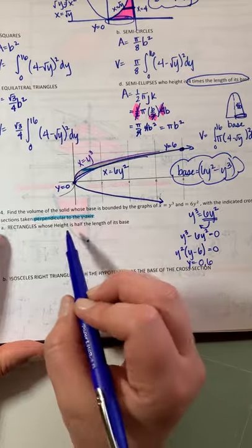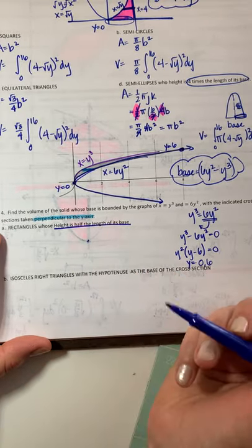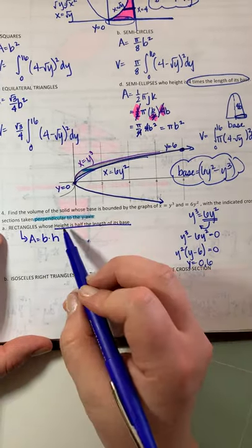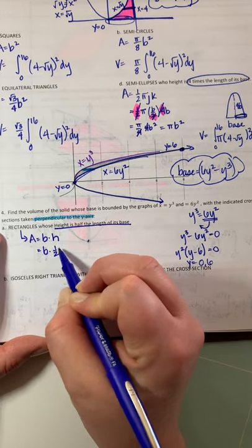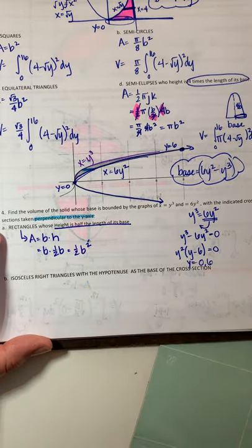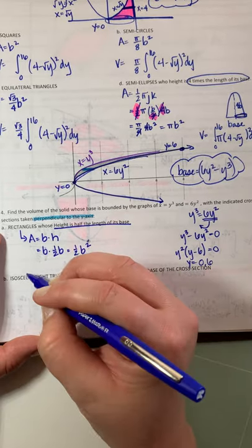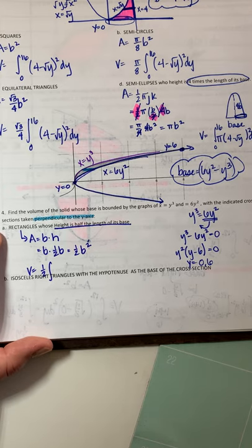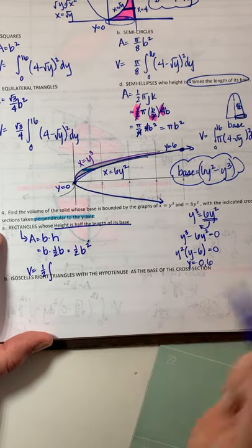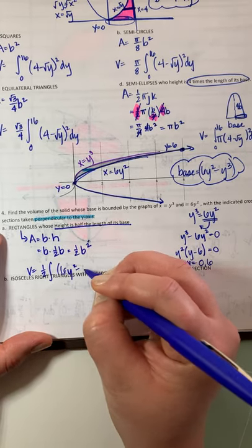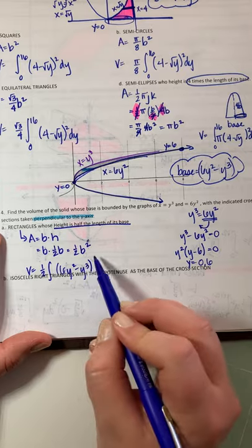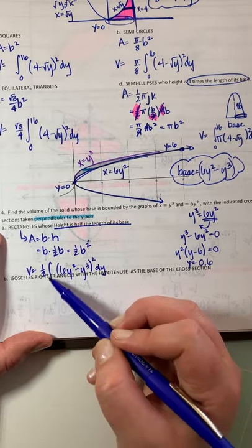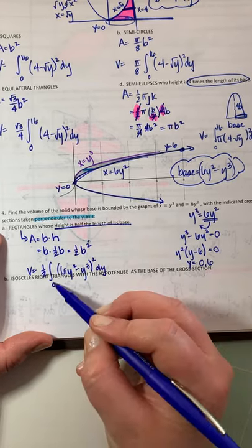For rectangles where the height is half the length of the base: area equals base times height, but height equals half the base, so area equals base times half-base equals one-half B squared. Volume: put one-half outside the integral, from 0 to 6, of 6y squared minus y cubed, squared, dy. That's not one you'd work out by hand — you'd use a calculator.